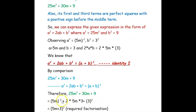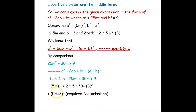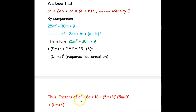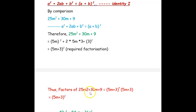We get: (5m) squared plus 2 into 5m into 3 plus 3 squared. Here a is 5m and b is 3, so we can rewrite the expression as (5m + 3) whole squared. This is our required factorization. Thus, the factors of 25m squared plus 30m plus 9 is (5m + 3) into (5m + 3), that is (5m + 3) whole squared.